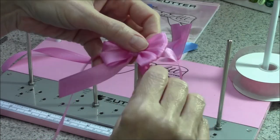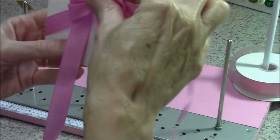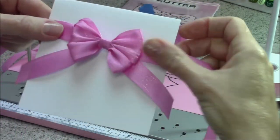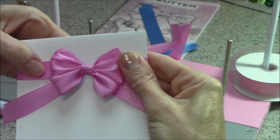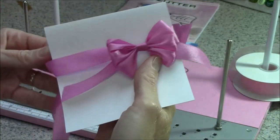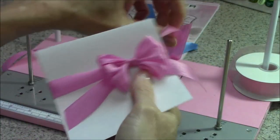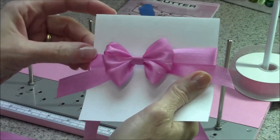So now we have our triple loop bow. Our tails. And the ribbon to wrap around the card. And it's ready to go. And this bow will slide on that ribbon. Once you tape the ribbon to your card, you can still move your bow if you need to adjust where it is.